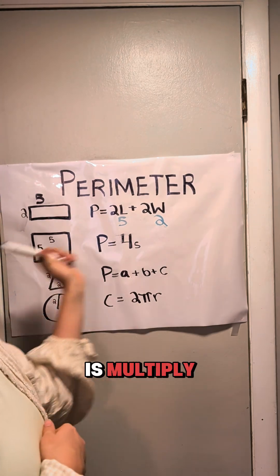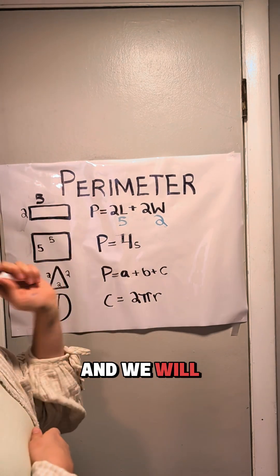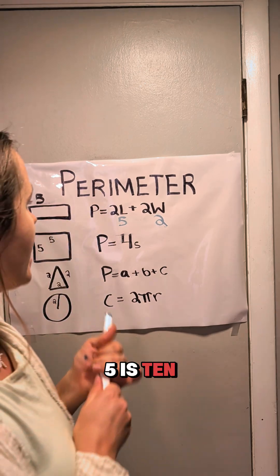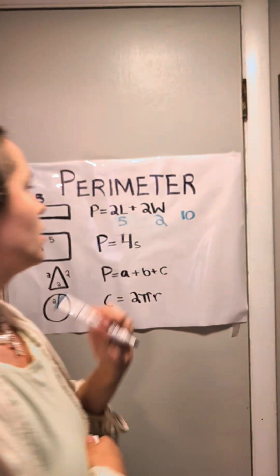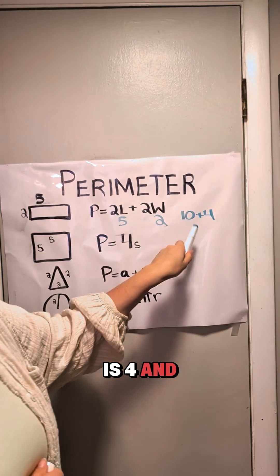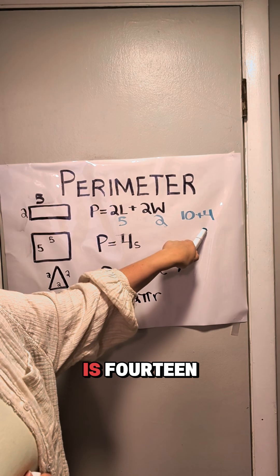Now all we have to do is multiply and add these things together, and we will get the perimeter. So 2 times 5 is 10, 2 times 2 is 4, and 10 plus 4 is 14.